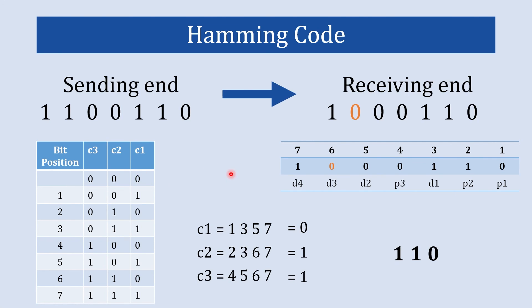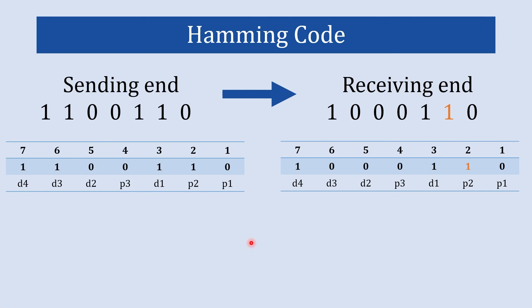Now here is an exercise: in the second code example there is an error with a parity bit itself. Follow the same error-detection process, find which error checking code you get, and write that code in the comments. There are other interesting error-correction codes in this playlist as well. See you in the next video.